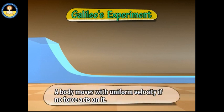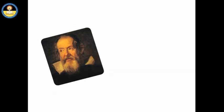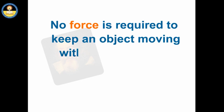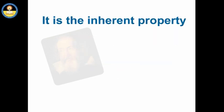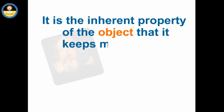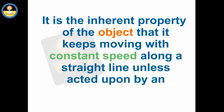This shows that an object moving with constant velocity continues to move with the same speed and in the same direction as long as no external force acts on it. Galileo proved that no force is required to keep an object moving with uniform speed, provided friction is not present. He concluded that it is the inherent property of an object to keep moving with constant speed along a straight line unless acted upon by an external force.